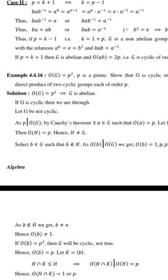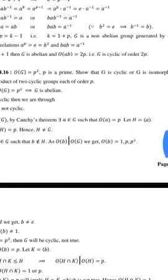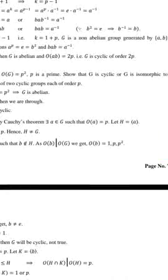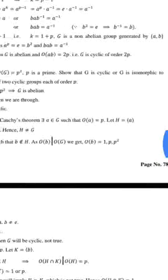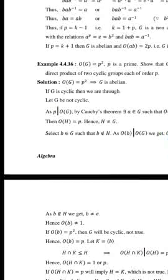Next example: the order of G is equal to P², where P is prime. Show that G is cyclic, or G is isomorphic to the direct product of two cyclic groups, each of order P.